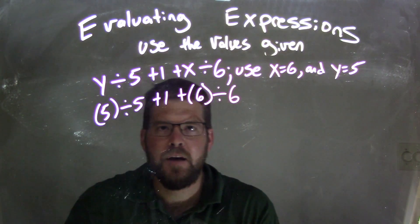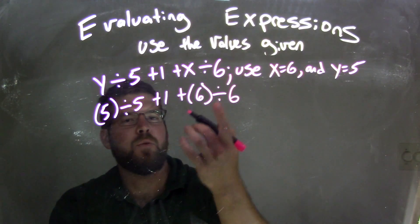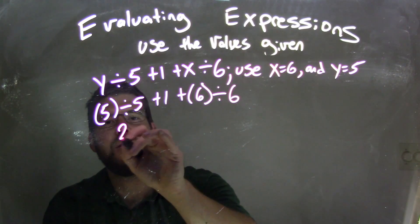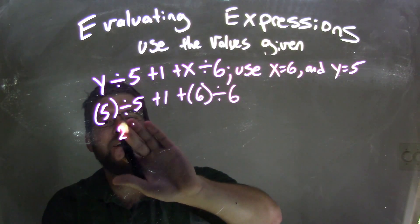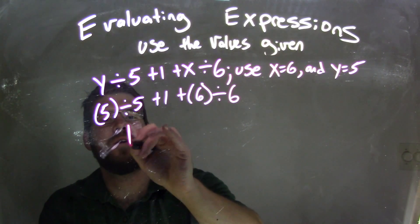Well, 5 divided by 5, division is one of our highest operations here. We have two sets of division here, so 5 divided by 5 is... it's not 25, it's 1, right? Any number divided by itself is 1, plus 1 comes down.